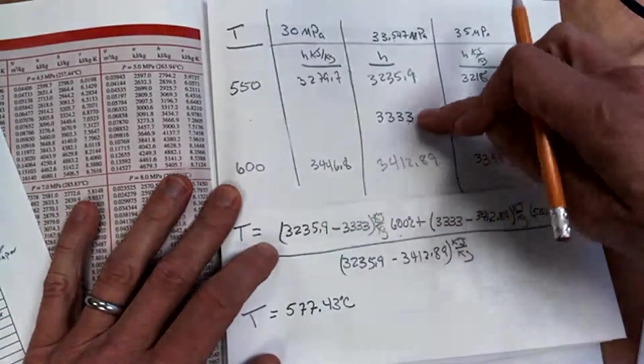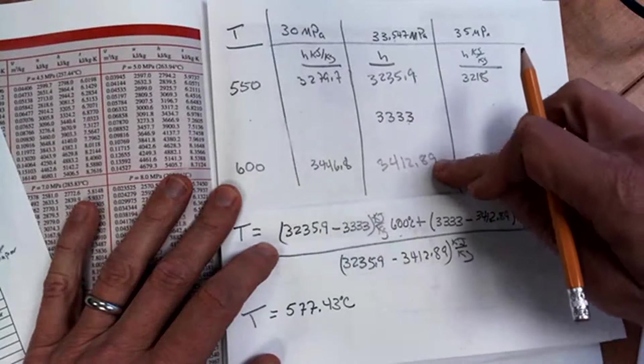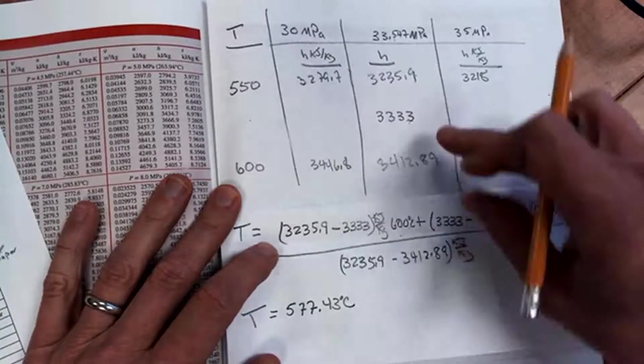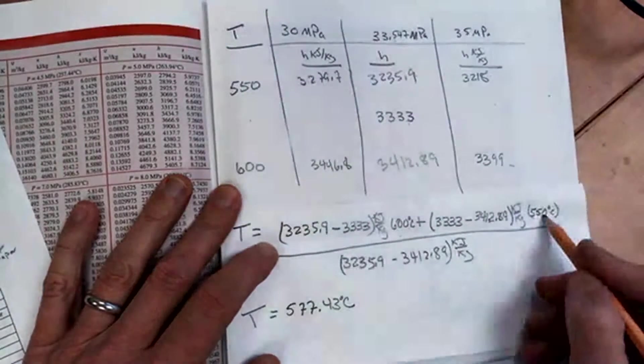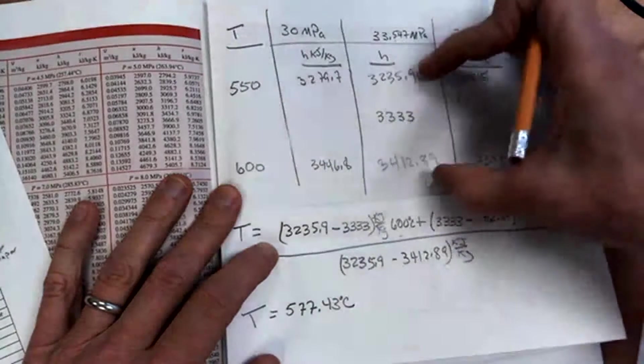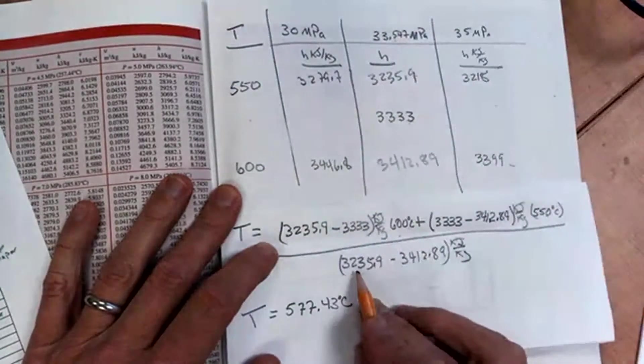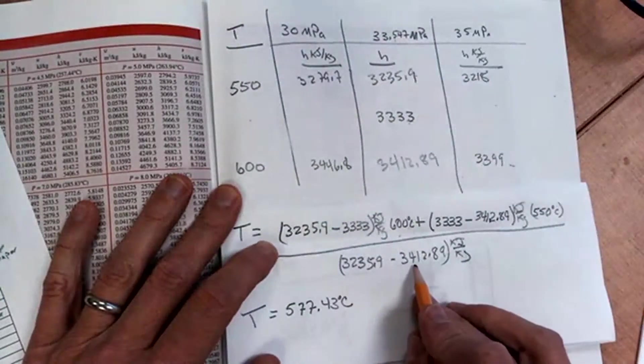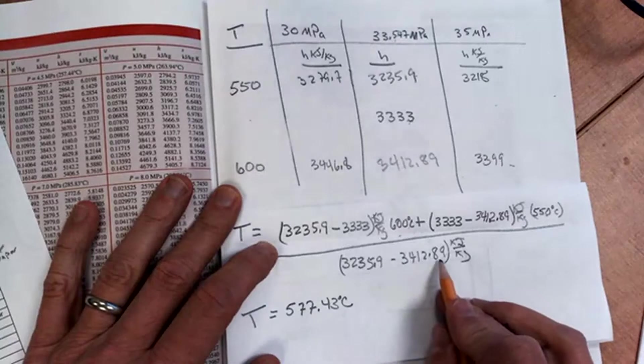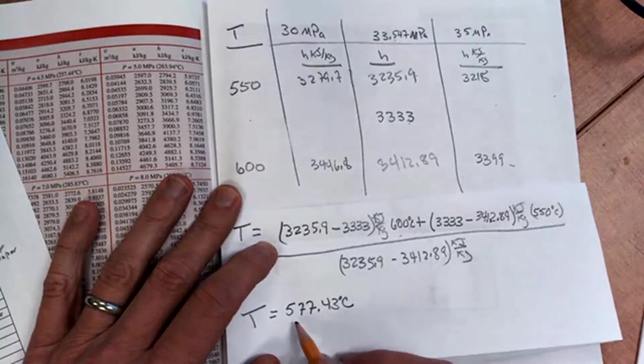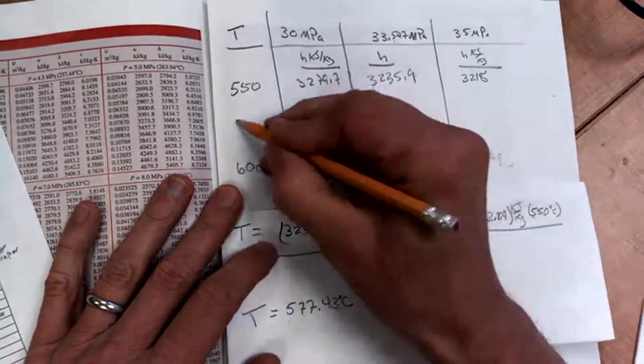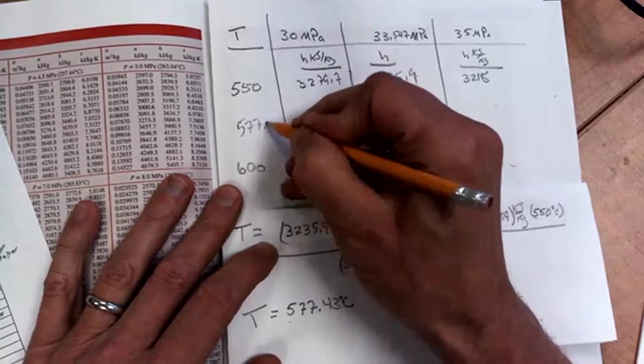Then this value, 3,333 minus 3,412.89 times the opposite value, 550, all divided by the total length, 3,235.9 minus 3,412.89. I get a temperature of 577.43.